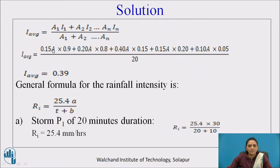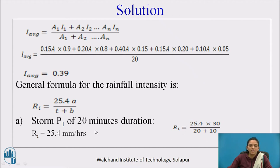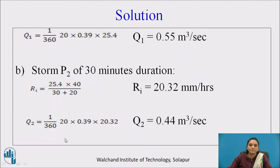List out the given data. For example, A1 (roof) = 0.15A and I = 0.9. Similarly fill in A and I for all surface types; total area is 20 hectares. Calculate I_average = 0.39. Since frequency of the storm is not given, use the general formula R_i = 25.4 × A / (T + B). For storm P1, duration = 20 minutes, so from Table 3, A = 30 and B = 10. Putting values into the formula gives R_i = 25.4 mm/hour.